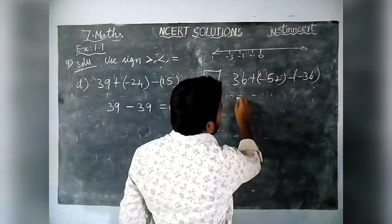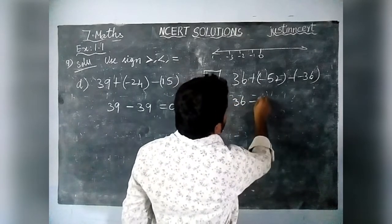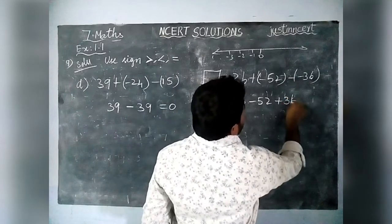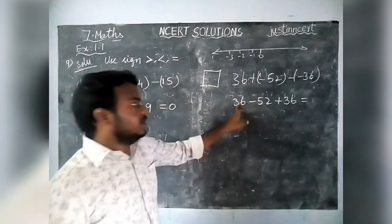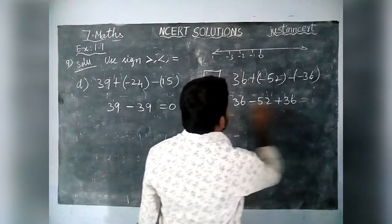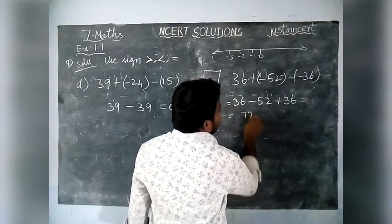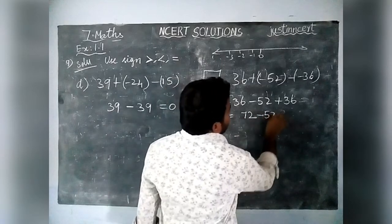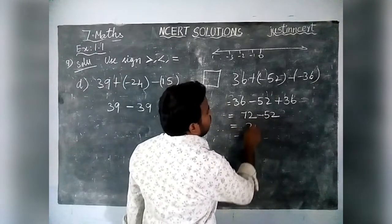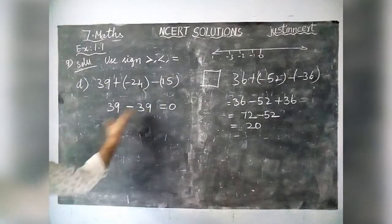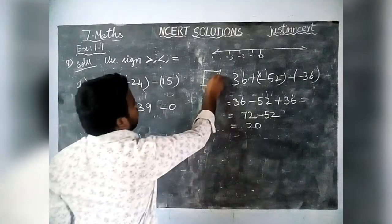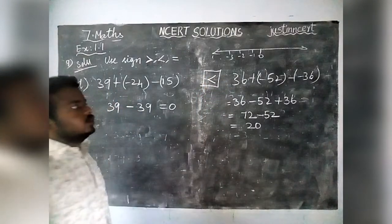Now the right hand side: 36 minus of minus 52, plus 36. The minus of minus becomes plus, so we have 36 plus 36 plus 52. That gives 72 minus 52. Wait — 36 plus 36 is 72, minus 52 is equal to plus 20. Now, left hand side is 0, right hand side is 20. The greatest number is 20, so we use the less than symbol.